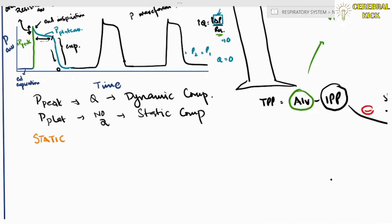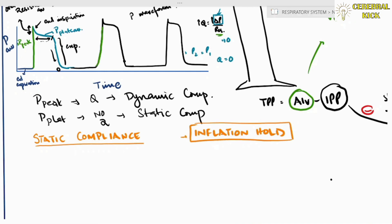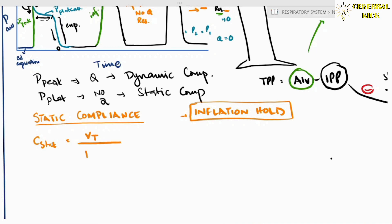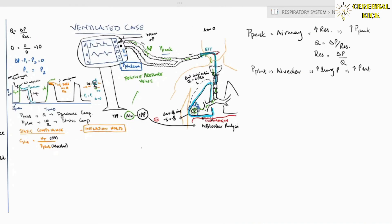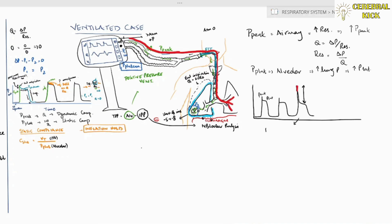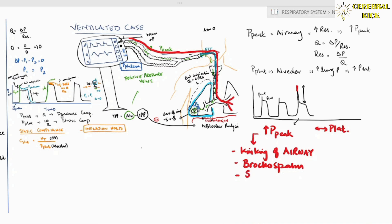Static compliance of a ventilated case is calculated through an inflation hold — a command given to the ventilator. Once peak pressure is reached and end-inspiratory phase starts, inflation hold stops flow, and the pressure registered is the plateau pressure. Static compliance equals tidal volume divided by plateau pressure. Clinically, if peak pressure increases but plateau pressure remains the same, something is wrong with the airways — kinking, bronchospasm, or anything increasing resistance requiring greater peak pressures to generate flow.